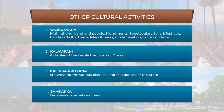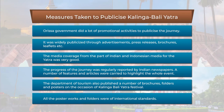The fourth main parallel event was the Samparka, which comprised many smaller events in the form of seminars, special lectures, and small exhibitions, each adding its own spark to the entire show. For the publicity, measures were taken to publicise the Kalinga Bali Yatra — the Orissa government did a lot of promotional activities regarding the actual journey from Paradeep to Bali, and it was widely publicised through advertisements, press releases, brochures, leaflets, and many other items.